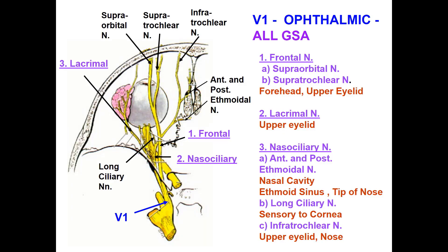The nasociliary nerve has three branches: the long ciliary nerve for the cornea of the eye; the anterior and posterior ethmoidal nerves for the nasal cavity, ethmoidal sinus, and tip of the nose; and the infratrochlear nerve supplying the upper eyelid. The ophthalmic division all has general sensation. The supratrochlear is medial and the supraorbital is lateral, both for the forehead and upper eyelid. The lacrimal nerve is for the upper eyelid. The nasociliary supplies the nasal cavity, ethmoidal sinus, tip of the nose, the cornea via the long ciliary nerve, and the upper eyelid via the infratrochlear nerve.